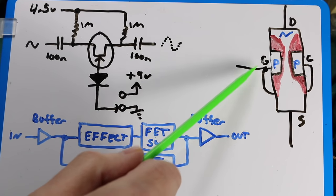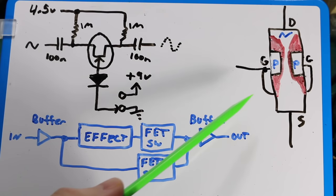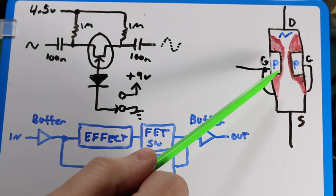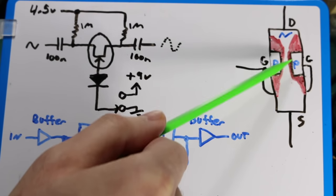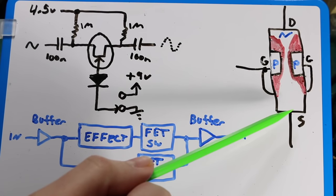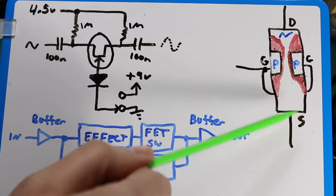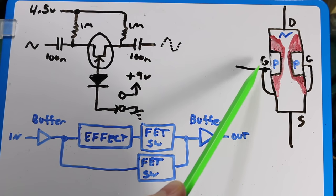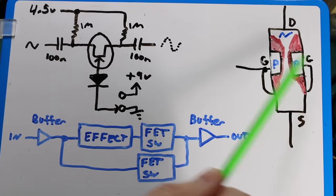So the JFET has a gate, source, and drain, and it's made of N-type and P-type silicon. In the N-channel JFET, the main body is N-type silicon, and it's normally an open channel when there's no gate voltage applied. The gate consists of P-type silicon around the N-type.